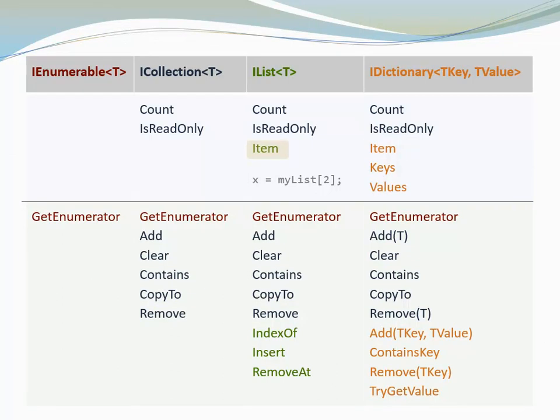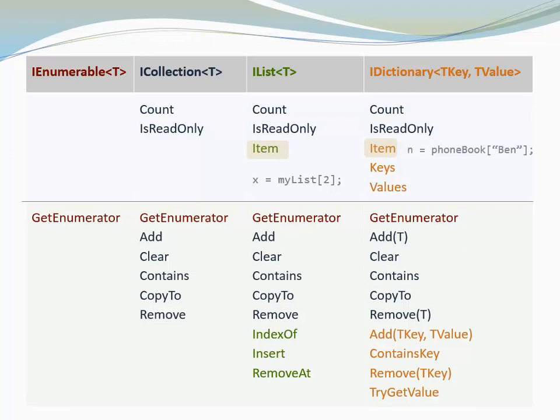IDictionary has an Item property too. In case of IDictionary, we provide the key inside the brackets in order to look up the corresponding value. Let's look at another example. Here, I have a dictionary called PhoneBook. It stores my friends' names and their phone numbers. I use the Item property to look up Ben's phone number and I assign it to a variable called n.